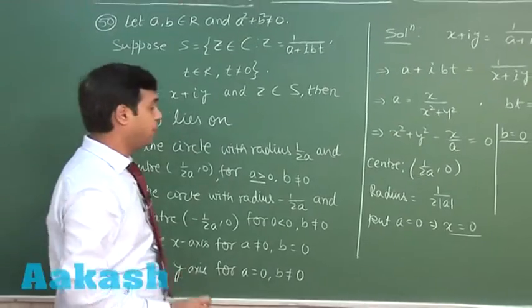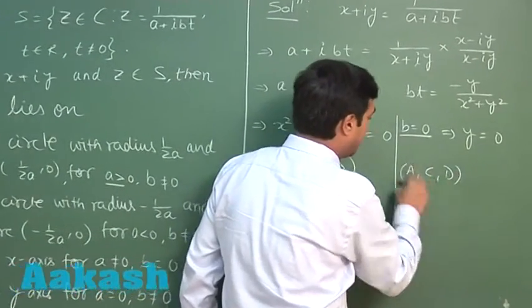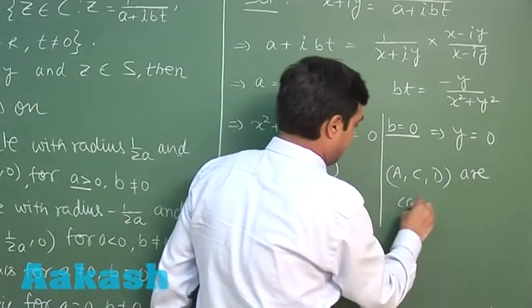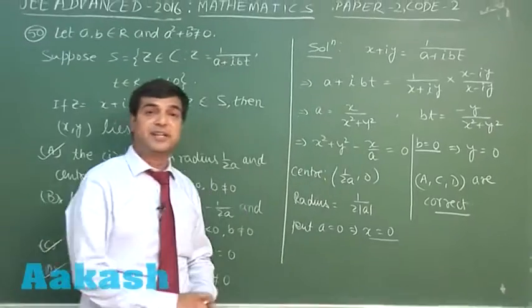With a = 0, we are getting the y-axis. Hence, from the given options, we observe a, c, d are correct. Let us move to the next one.